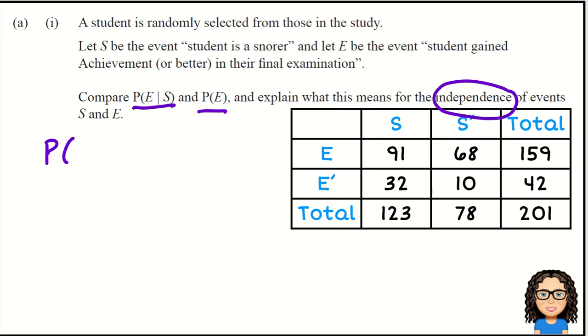Let's start with the probability of achieving given that somebody snored. Given that somebody snored, there are 123 students who snored and 91 of those achieved. That's going to be 91 out of 123, and I'm going to turn that into a decimal because I need to compare it. I personally find it easier to compare decimals, so that would be 0.740.